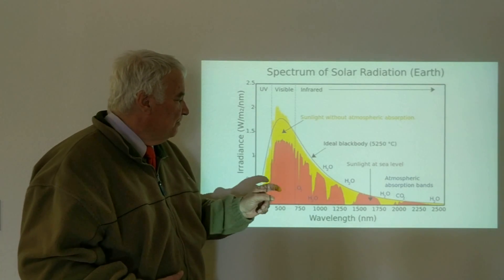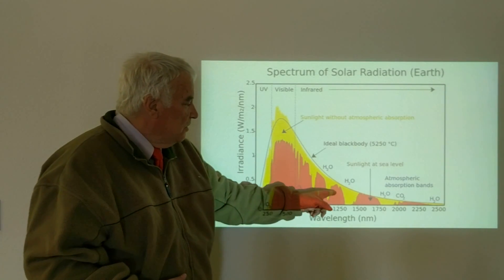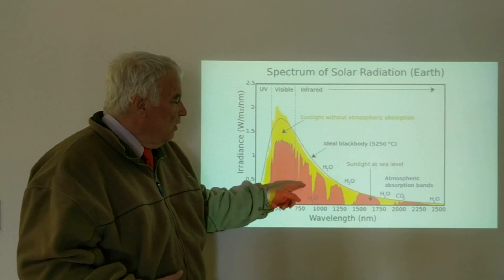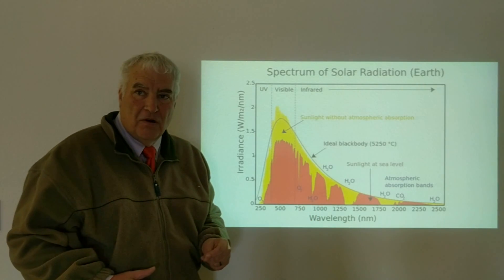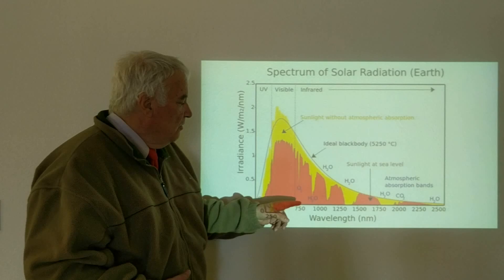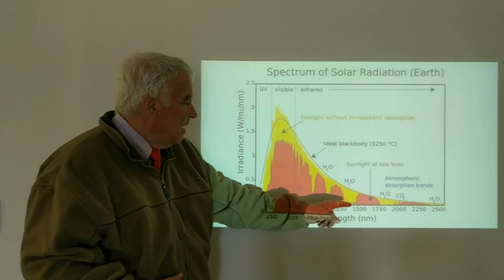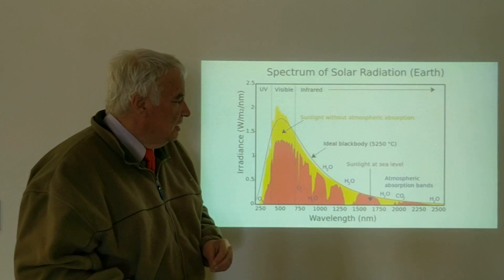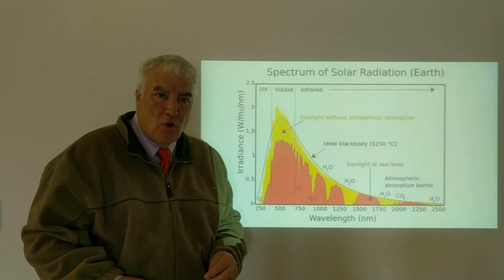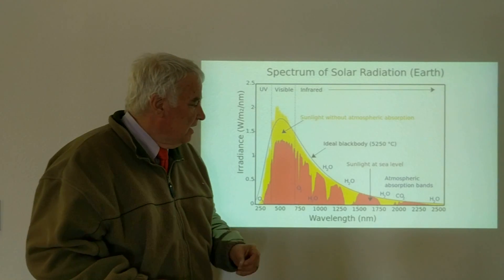And then we have the red, which is what the atmosphere of the earth is absorbing. So the water in the earth's atmosphere, carbon dioxide, and oxygen is absorbing light from the sun, and that's why a lot of that is not getting through to the ground.